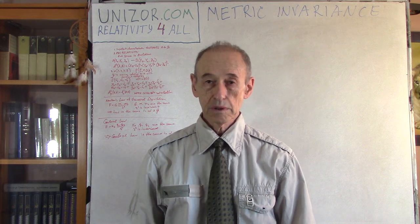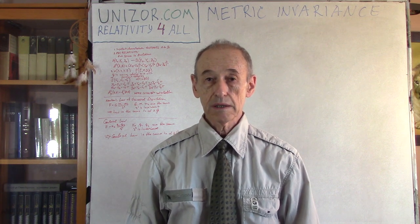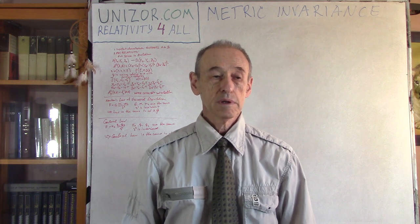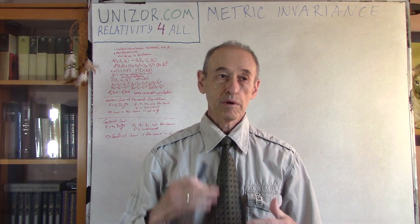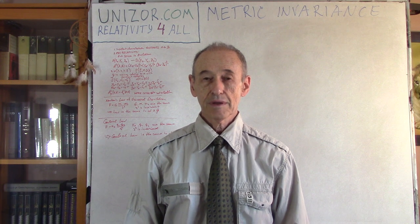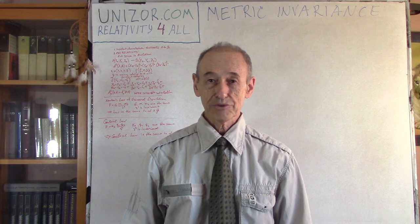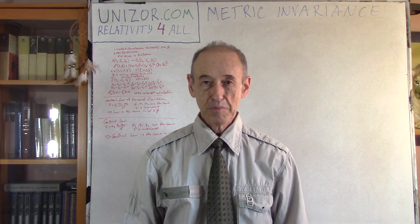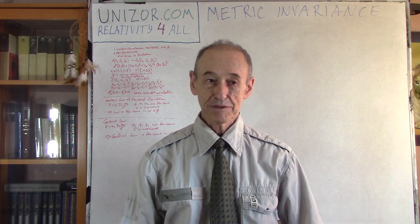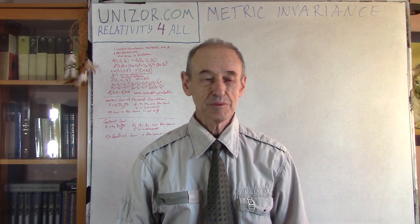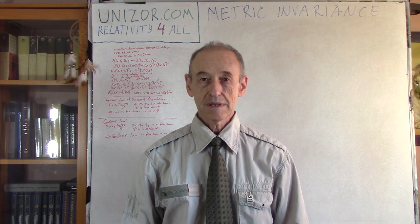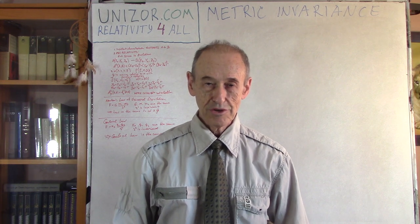I would like to start today by analyzing whether the distance between two points in one inertial system is exactly the same as in another inertial system when we connect these two systems with a Galilean transformation. The more scientific term for this is the metric of our space, and the topic of this particular lecture is called metric invariance.